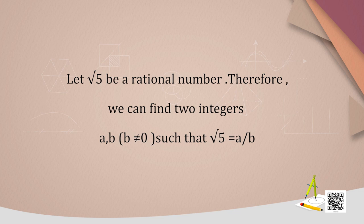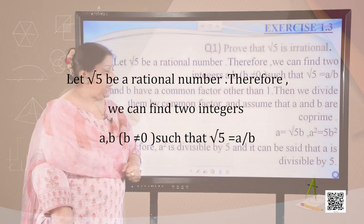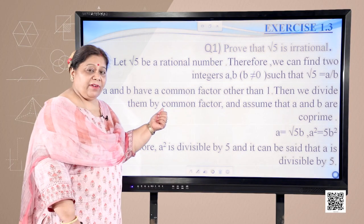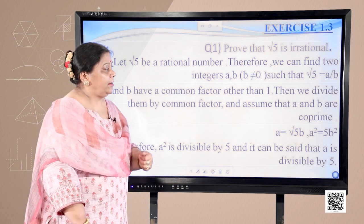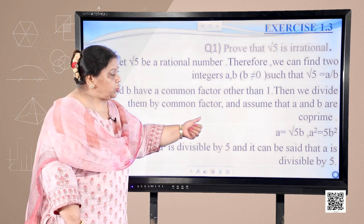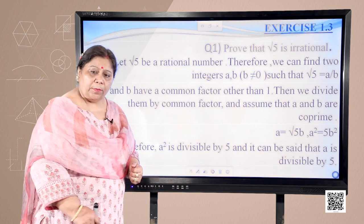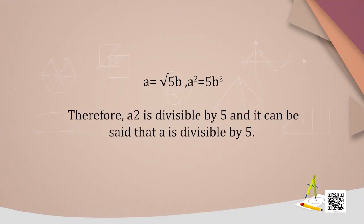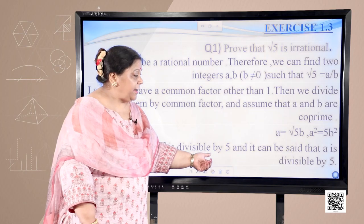Let √5 be a rational number. Therefore we can find two integers a and b, b not equal to 0, such that √5 = a/b. Let a and b have a common factor other than 1; then we divide them by the common factor and assume that a and b are co-prime. So a = √5 × b. On squaring we get a² = 5b², therefore a² is divisible by 5.